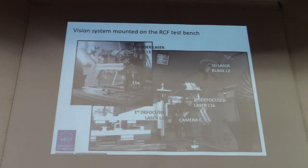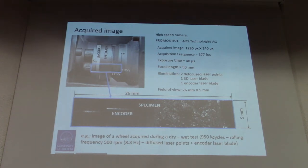This is the vision system mounted on the rolling contact fatigue test bench. What we obtain is typically an image like the one you can see in this slide, which is an image of a wheel acquired during an alternated dry-wet test at 950 kilocycles at a rolling frequency of 500 rpm, illuminated by the diffused laser pointers.